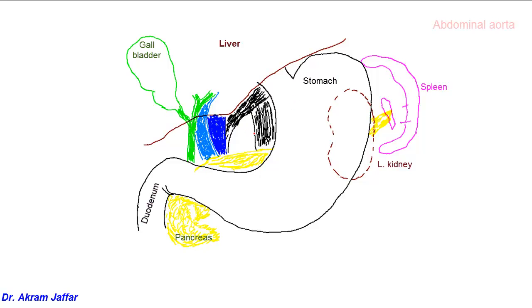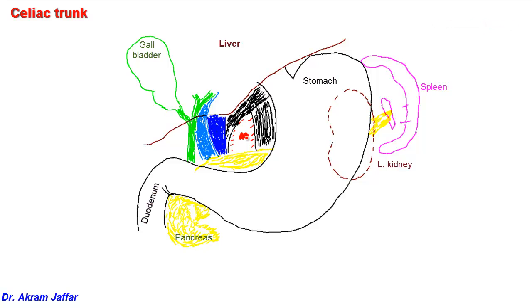Between the two crura of the diaphragm passes the abdominal aorta. This is the region of the abdominal aorta, the continuation of the descending thoracic aorta. It passes behind the crura of the diaphragm at the level of T12 vertebra. Immediately as it passes into the abdomen, it provides a short wide trunk — and this is the celiac trunk.